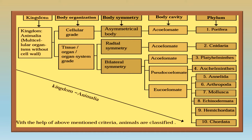For example, Porifera is acoelomate with an asymmetrical body and cellular grade. Cnidaria is acoelomate with radial symmetry and can belong to tissue, organ, or organ system grade. Platyhelminthes is acoelomate with bilateral symmetry. Aschelminthes is pseudocoelomate with bilateral symmetry. From Annelida onwards through Chordata, all phyla are eucoelomate with bilateral symmetry and tissue, organ, or organ system grade.